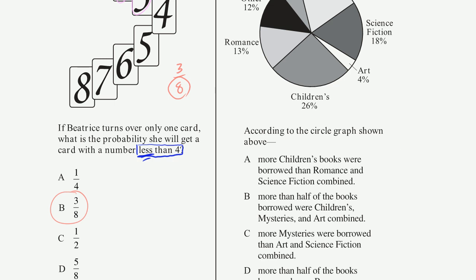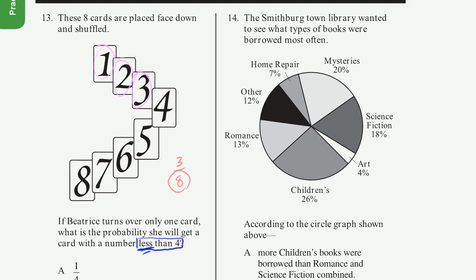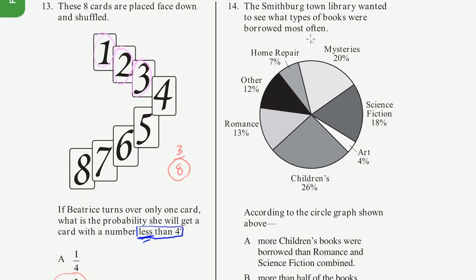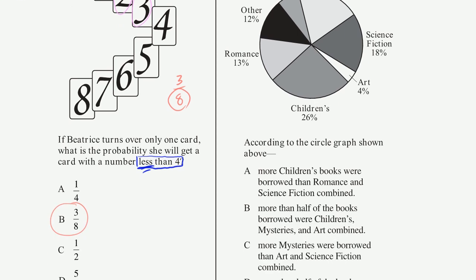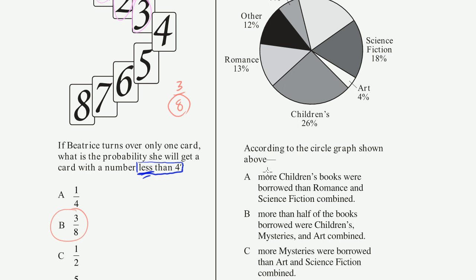OK, problem, what's the next problem? Problem 14. The Smithburg Town Library wanted to see what types of books were borrowed most often. All right, there we go. They drew a little pie diagram. According to the circle graph shown above, OK, let's see which of these statements are true.